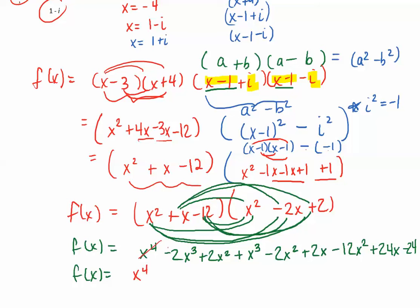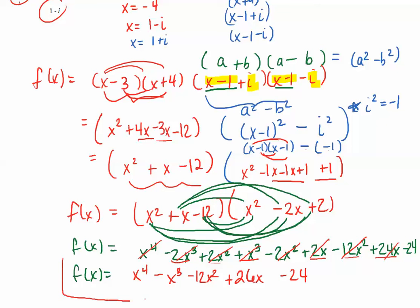The last step is to collect like terms and write the polynomial in descending order. I have x to the fourth. For x cubed: negative 2x cubed plus x cubed is negative x cubed. For x squared: 2x squared minus 2x squared is gone, leaving negative 12x squared. For x: positive 2x. And then minus 24 for the constant term. So this is the fourth degree polynomial.